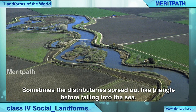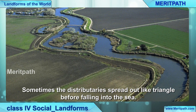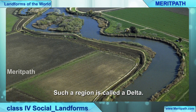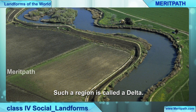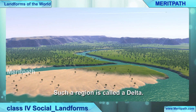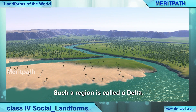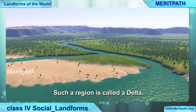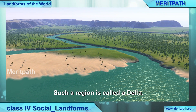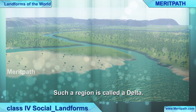Now we are going to learn about the delta. Sometimes the distributaries spread out like a triangle before falling into the sea — such a region is called a delta. You can see in the diagram how a big river breaks up into different rivers forming a triangular shape before entering the sea. This is called a delta.